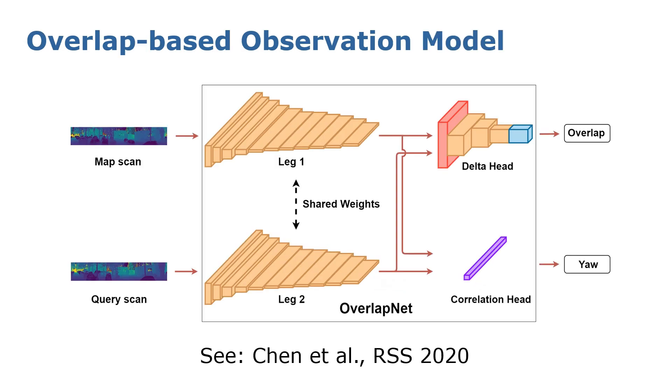The OverlapNet is a modified Siamese network. It can estimate the overlap and yaw angle offsets between two 3D LiDAR scans without knowing the relative transformation. For more information about OverlapNet, I would like to refer you to our RSS paper.